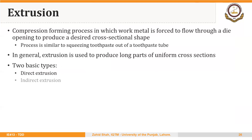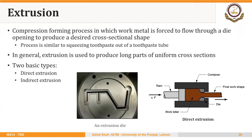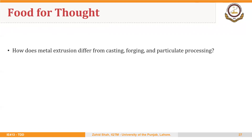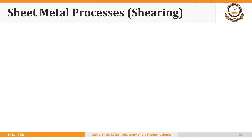The same is true about extrusion dies. This is an example of an extrusion die. The extrusion process is used to make parts of uniform cross section throughout the length. As food for thought: how does metal extrusion differ from casting, forging, and particulate processing?